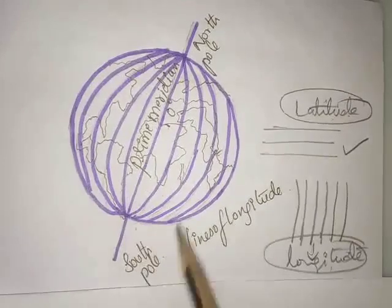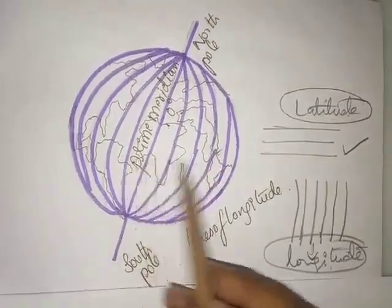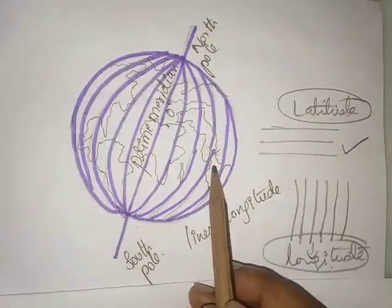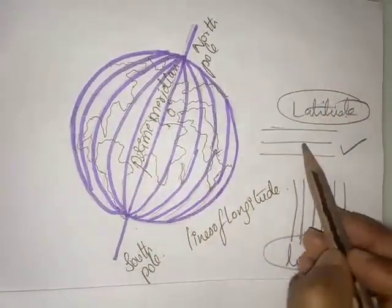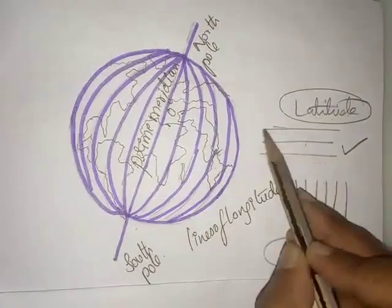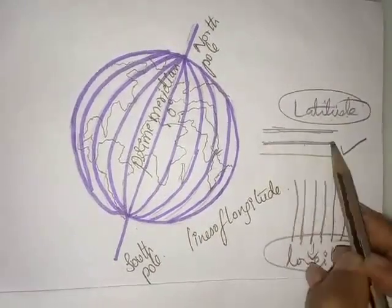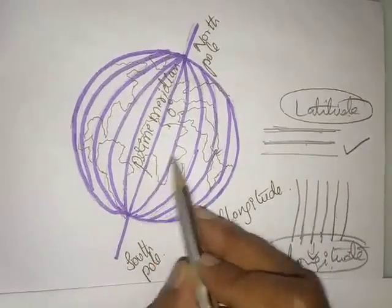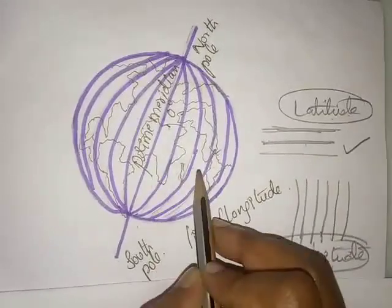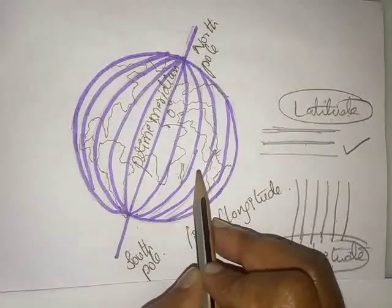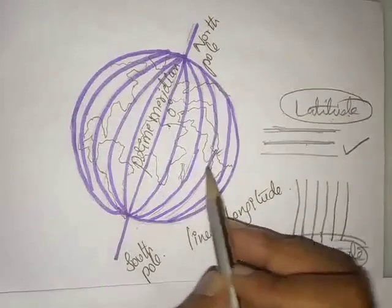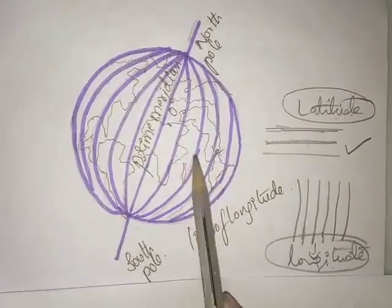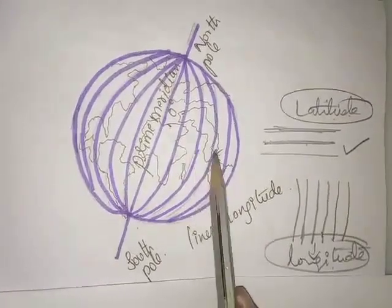These lines are not parallel to each other — unlike latitude lines which are parallel. However, the distance between each of the longitude lines is equal, and they have the same length.